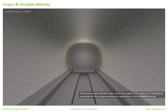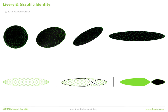Livery and graphic identity. The ever-present double helix spiral throughout the cabin is a continuous reminder of the unique advanced twin-phase capabilities of the AW609 aircraft. In keeping with the theme of transparency, this motif becomes the iconic signature element of the holistic design, not only for the interior, but also for the exterior design of the livery and the graphic identity of this revolutionary new breed of aircraft.